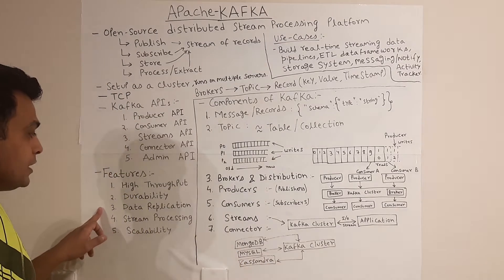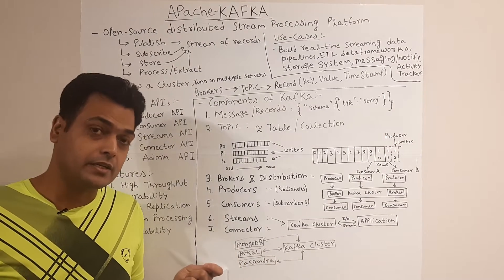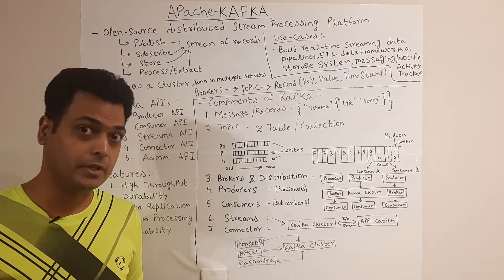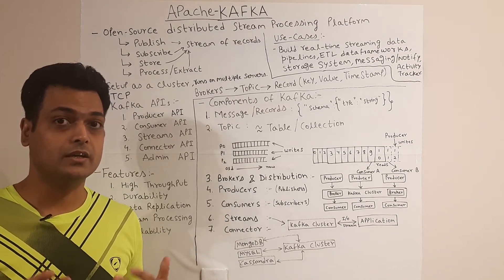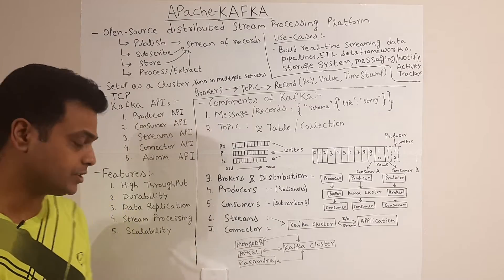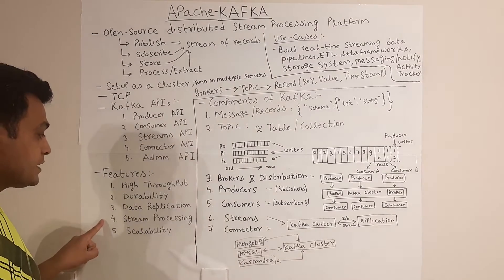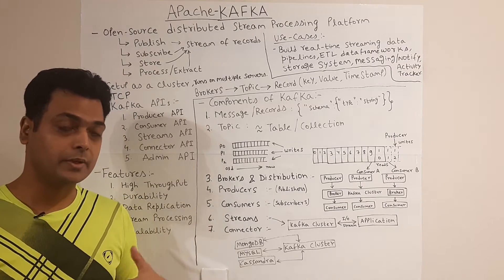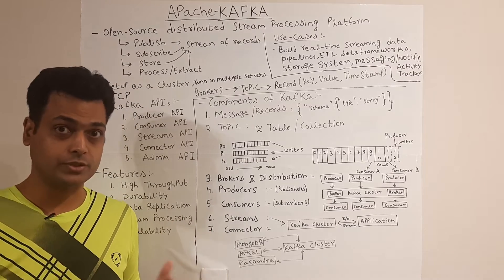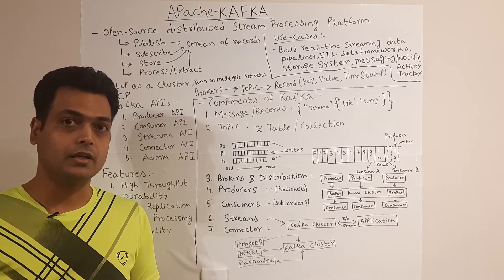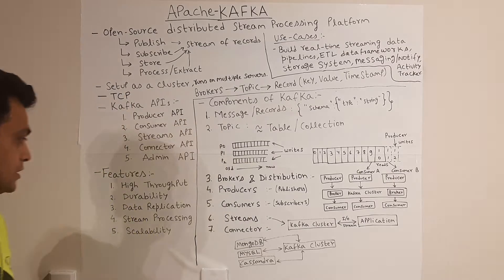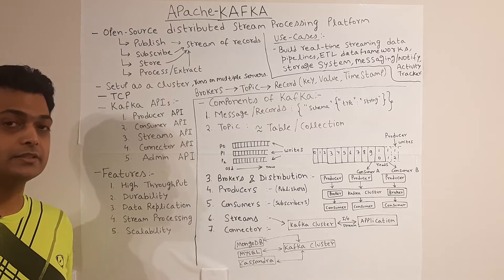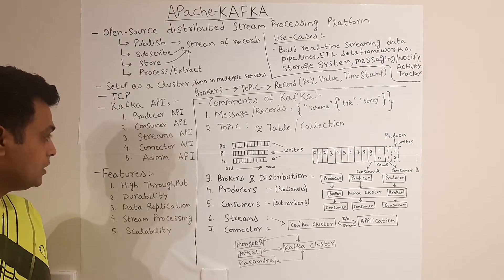Multiple replicas of the data are maintained across clusters spread across different regions, which makes Kafka support data replication and makes it work in various use cases. It takes care of stream processing so real-time incoming data can be processed. Being a distributed system, it is also highly scalable.